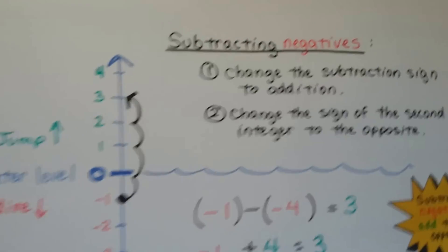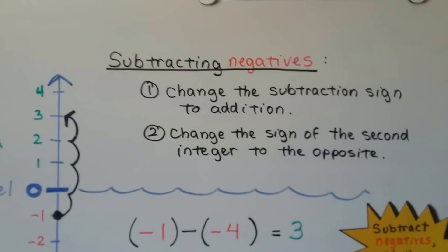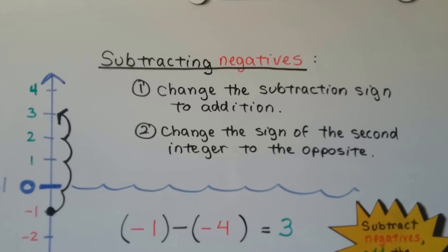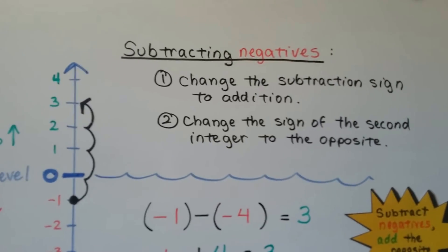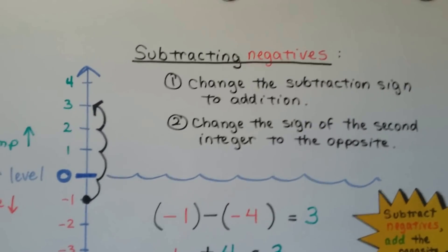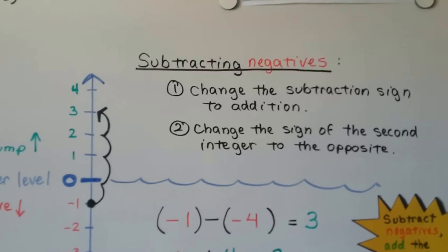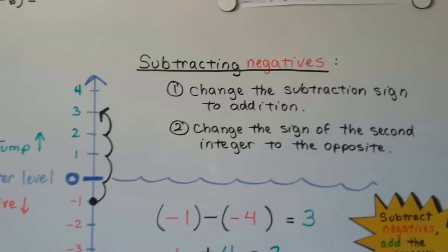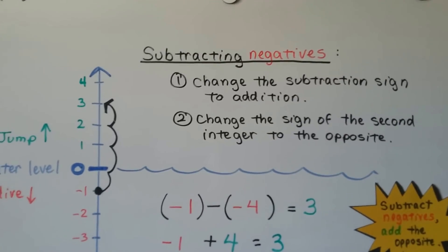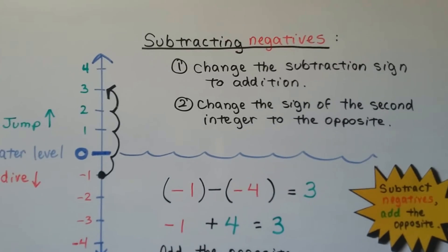When we subtract negatives, we have to change the subtraction sign to addition and then change the sign of the second integer — the subtrahend — to its opposite.